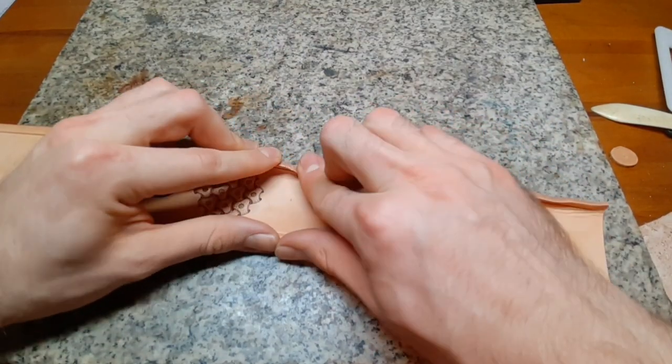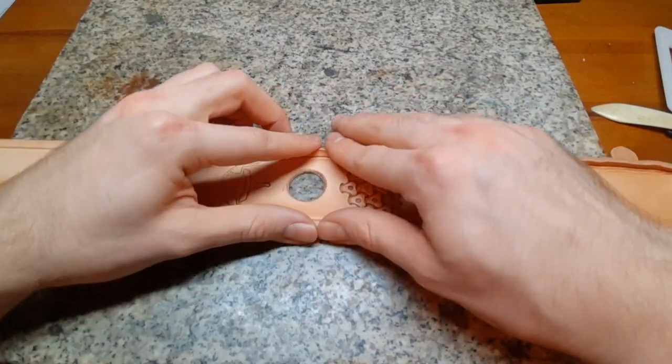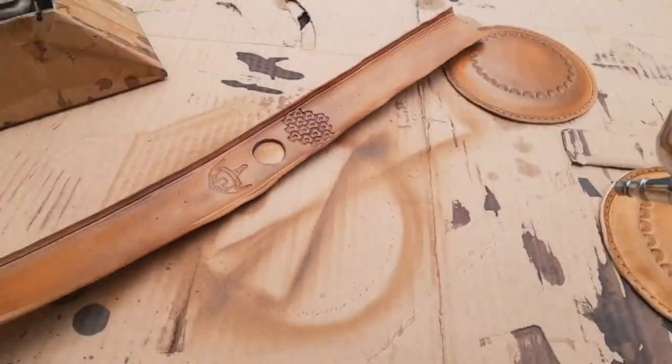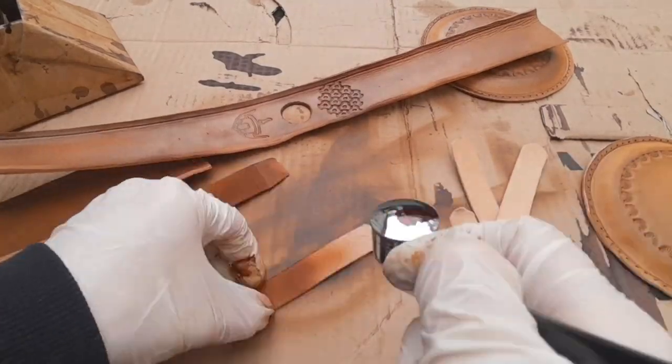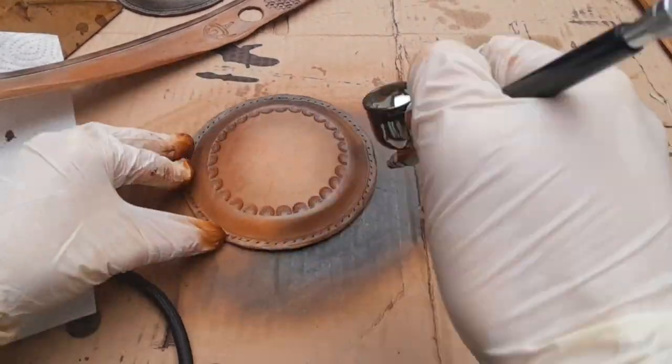Already bend the sides for sewing upwards but not too much since we need to put on some dye first. If you have you can use a spray gun to get on some paint, just make sure you get some good ventilation or simply go outside. But you also can use a sponge to get on the dye.